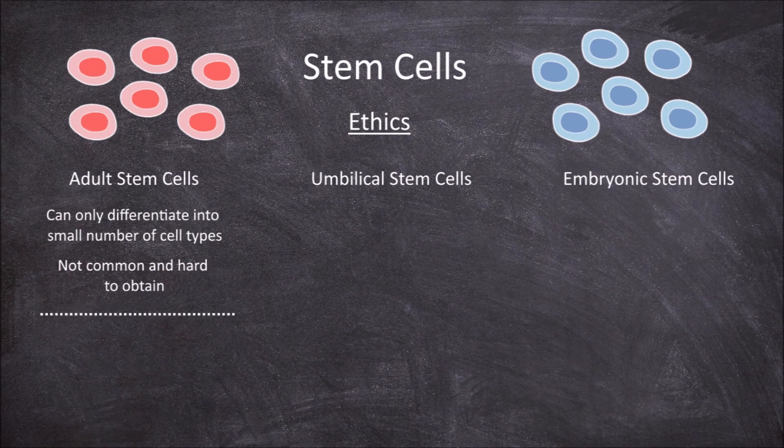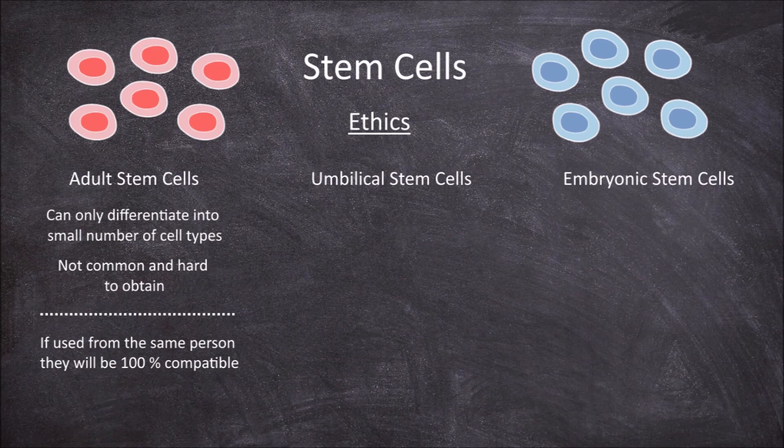A benefit of using adult stem cells from the same person being treated is that they will be 100% compatible, with no risk of rejection by the immune system. Adult stem cells do not raise as much of an ethical concern as the other sources of stem cells, as they are derived from the adult themselves and are becoming used more in research and therapeutic treatment.